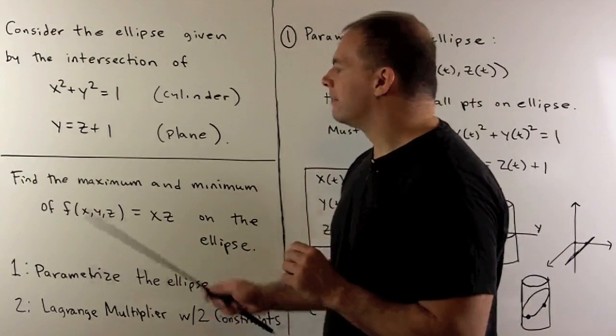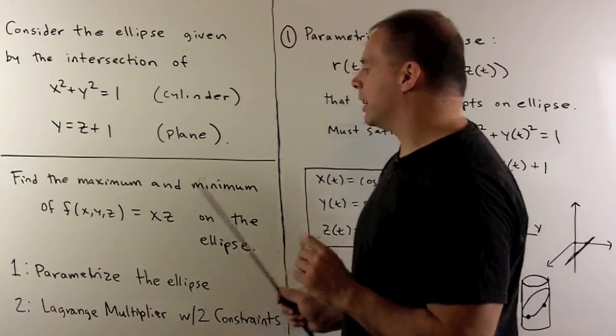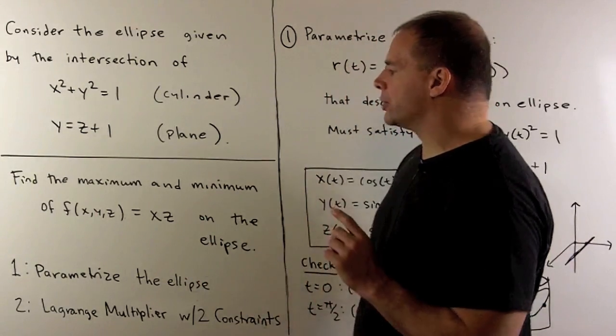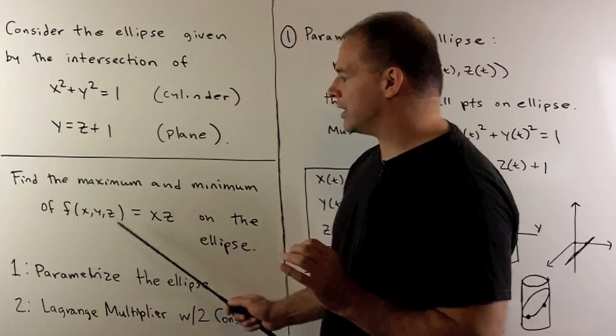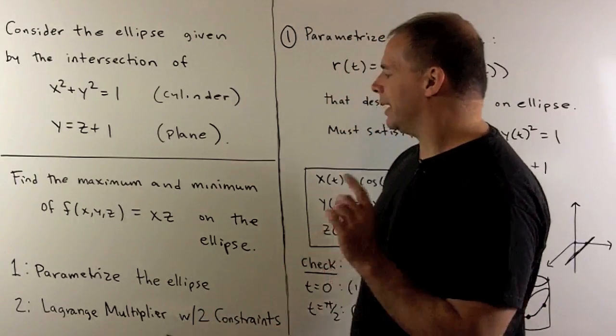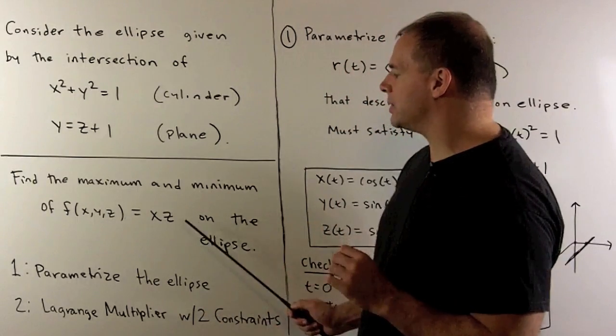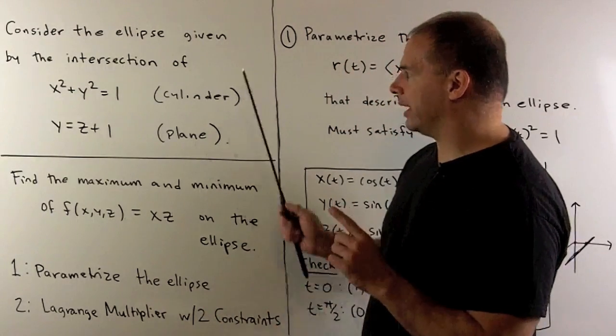Question: find the maximum and minimum values of f of x, y, z equal to x times z on the ellipse.